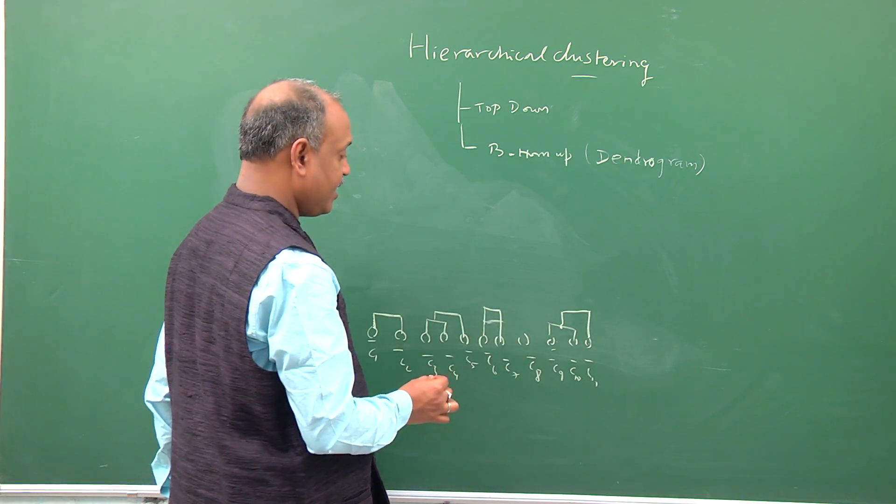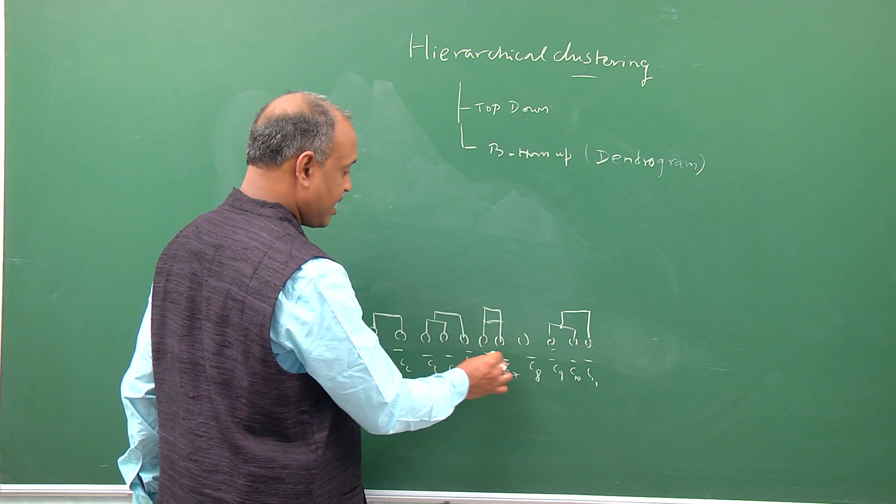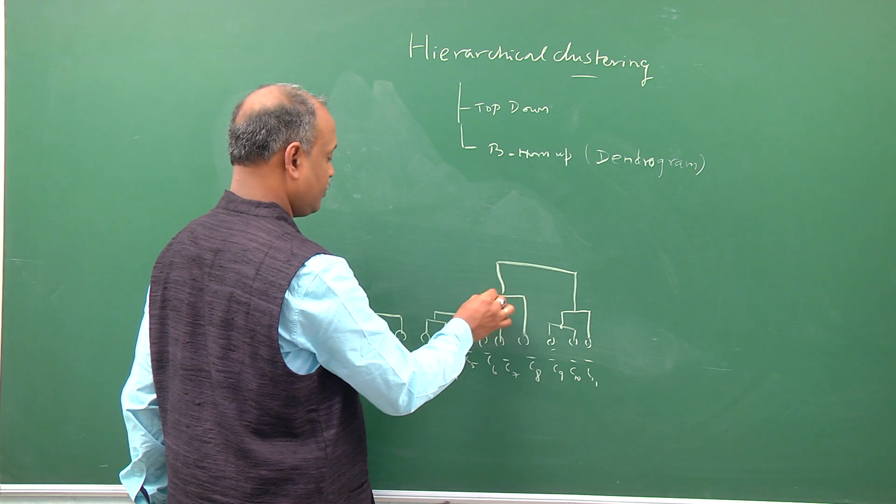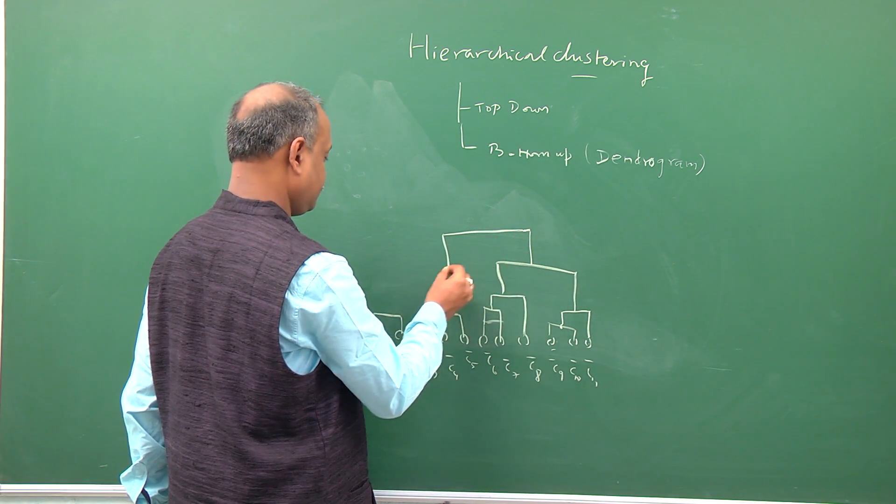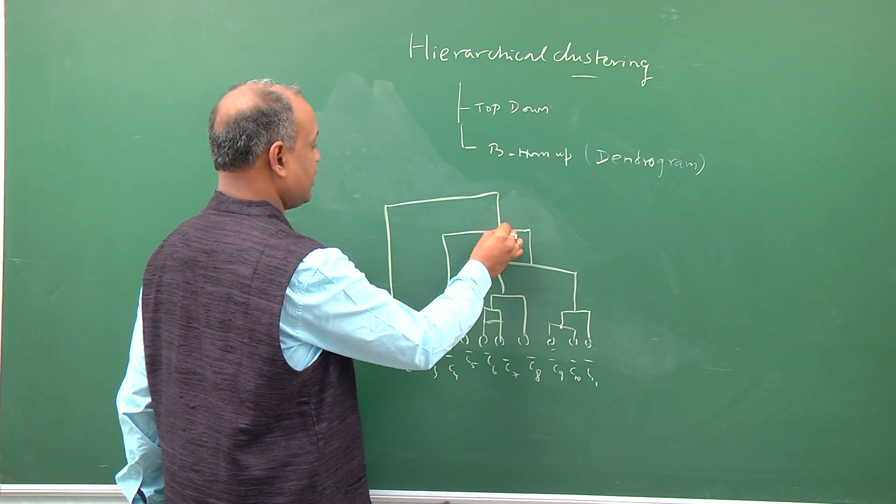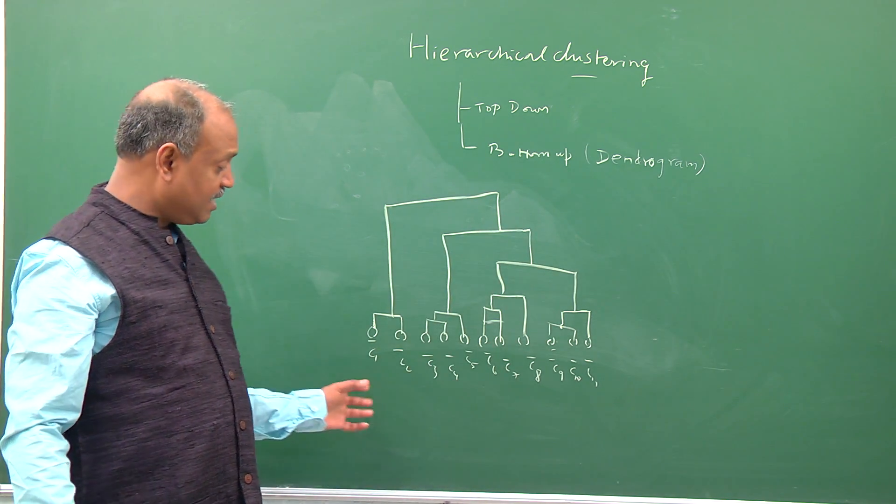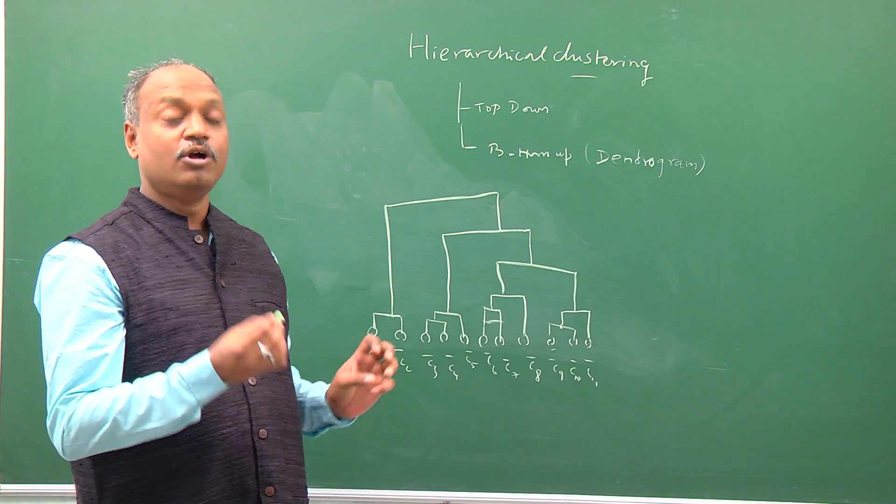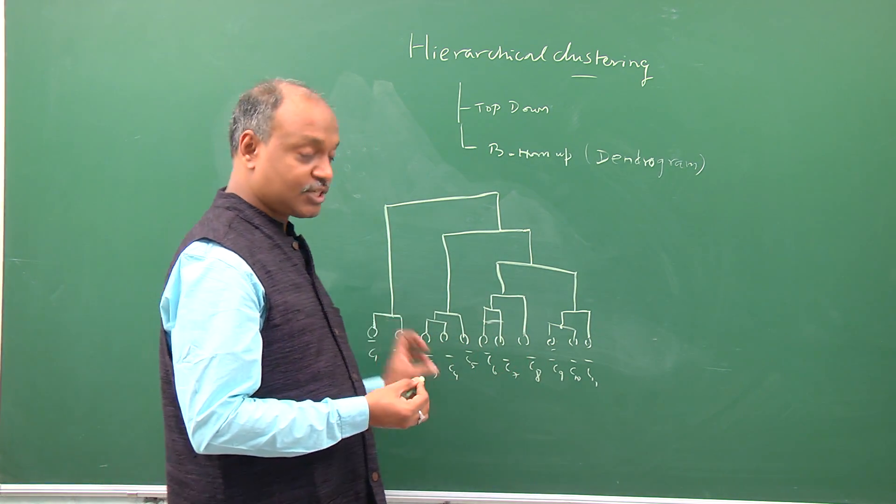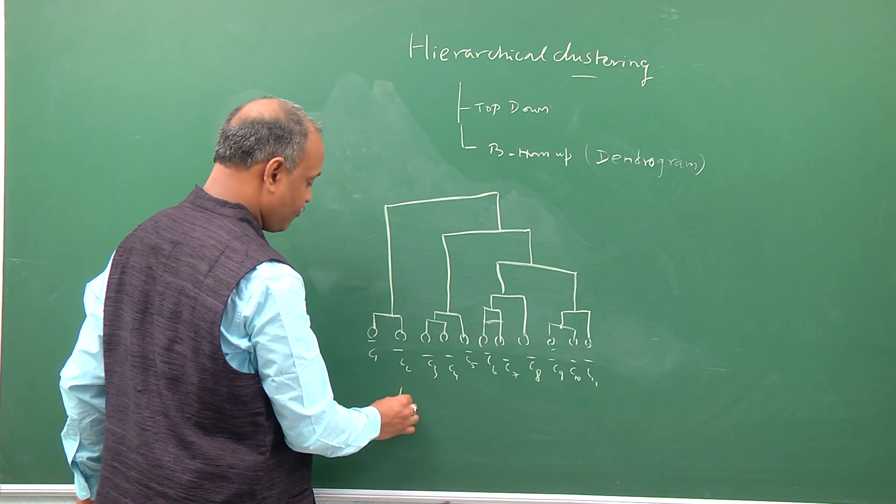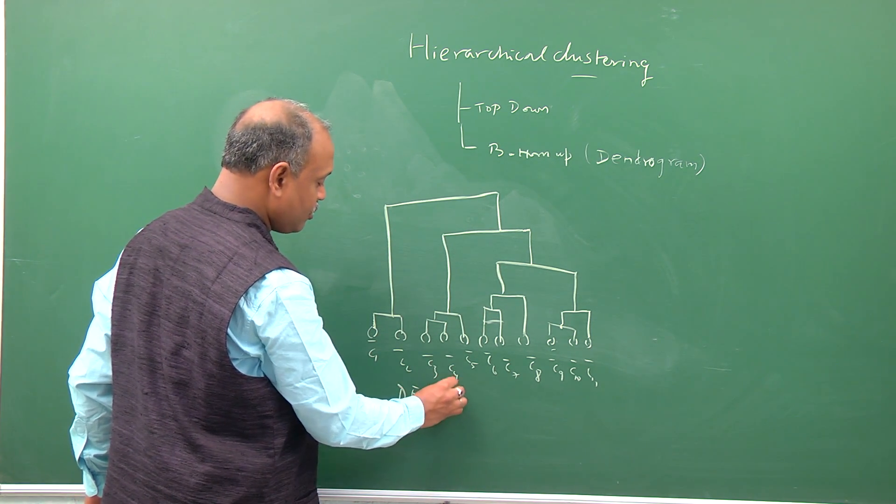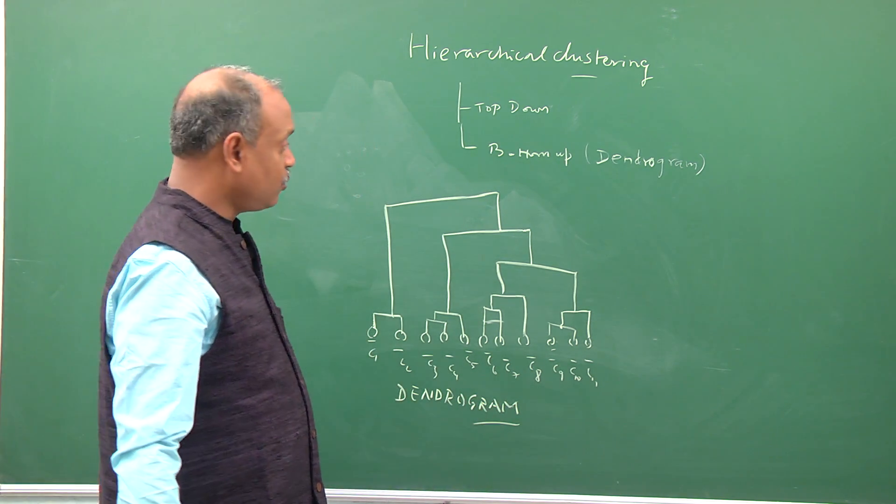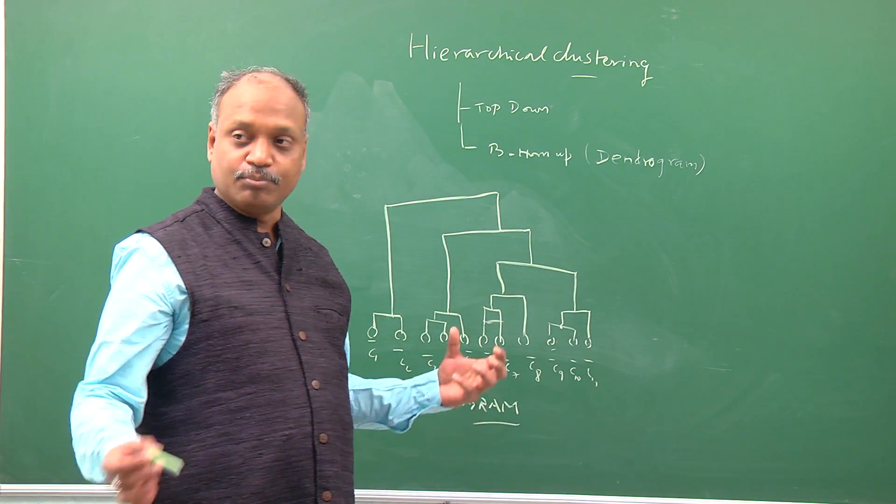So the way it works out is ultimately it is possible that you may form a cluster which is looking something like this. So this is basically an iterative formation of the tree of joining two clusters at any point based on the notion of two shortest distance clusters, and this diagram in its form is known as dendrogram. So dendrogram is basically a visualization of bottom-up clustering based on the notion of two closest clusters merged at each step.